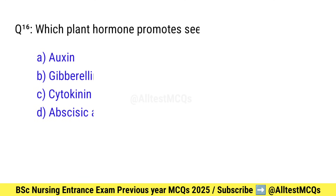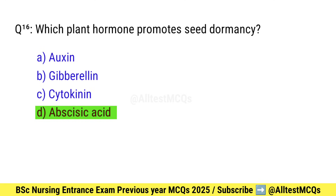Question number 16. Which plant hormone promotes seed dormancy? Correct option is D: Abscisic acid.